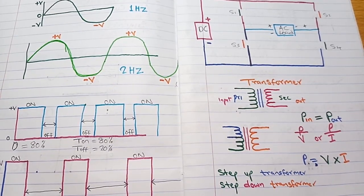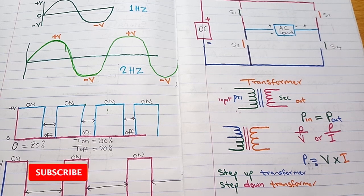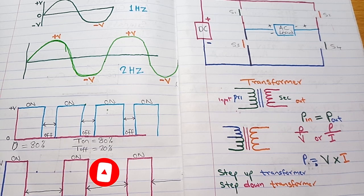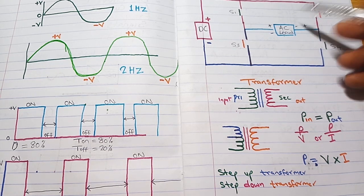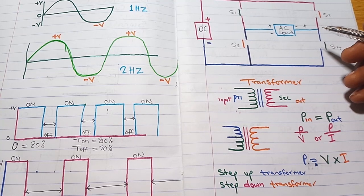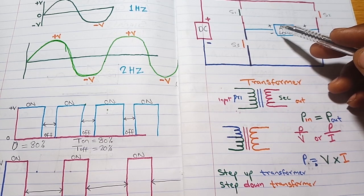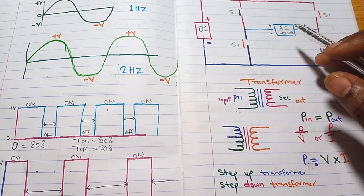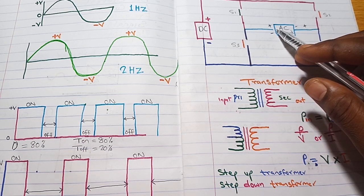Good day guys, welcome to Part 2 of Design of Solar Inverter for Beginners. In our last video, we talked about so many things like the signal topology, DC to AC, and how an inverter converts DC to AC using this diagram here.